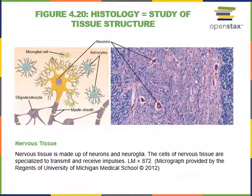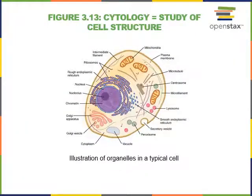Here we can see another image showing nervous tissue. There are several different types of cells found in nervous tissue: neurons as well as glial cells and different types of glial cells like astrocytes, microglial cells, and oligodendrocytes. All of these cells are working together as a tissue. The study of tissue structure is known as histology, and the study of cell structure is known as cytology.